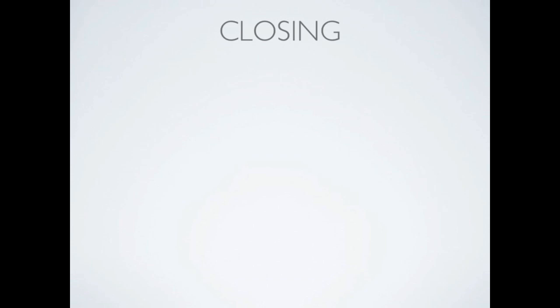Now let's look at closing. This should be a review, but in addition to what we already know, we're going to include those contra revenue accounts discussed earlier in the series. I always close my entries in the same order every time so I don't get confused. I always close revenues first using an income summary. Remember that revenues carry a credit balance — to get rid of it you debit your revenue account and credit the income summary.